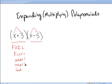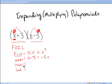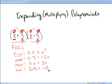This is a reminder of all the terms that need to be multiplied together. First: x times x leaves x squared. Outer: x times negative 5 is negative 5x. Inner: 3 times x is 3x. And the last terms: 3 times negative 5 makes negative 15. So when we multiply these two binomials together, the result is x squared minus 5x plus 3x minus 15.